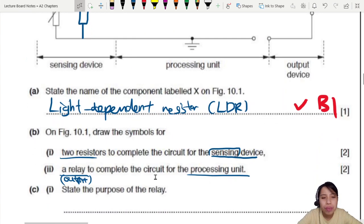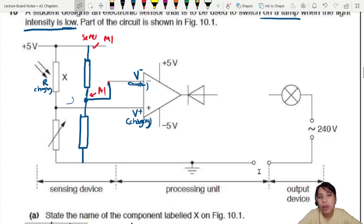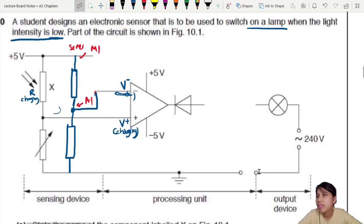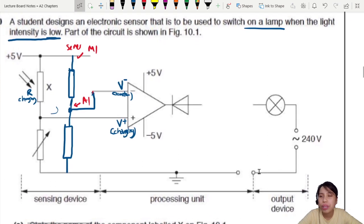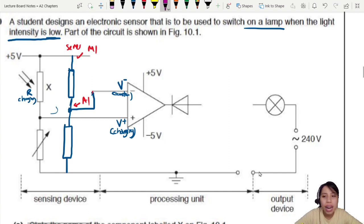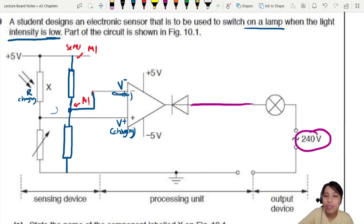What was the other thing they want us to draw? A relay to complete the circuit for the processing unit. Why do we need a relay in the first place? Take a careful look at this output device. This is a really high voltage supply here. And we don't want to connect this high voltage to our relay like this. That would be a bit dangerous because our op amp is going to burn. Our op amp cannot take such a big voltage. So we need a separate circuit.